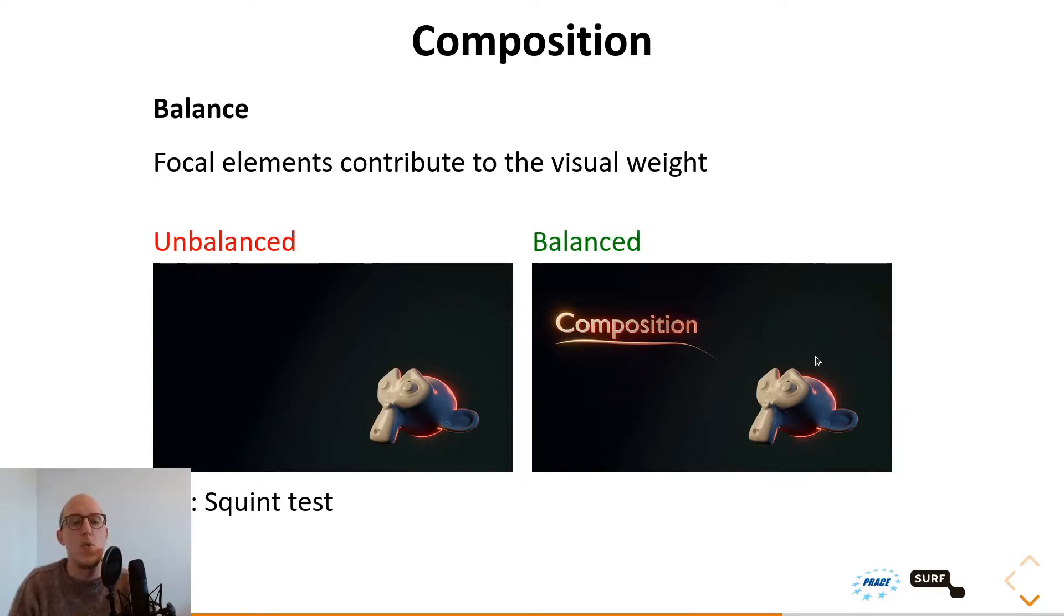Then we have the last composition component we're going to cover, and that is balance. Balance is the way you distribute your focal elements in your image so that the visual weight is balanced, so overall in the image it feels that the image doesn't have more focus on the left side than on the right side, for example. For example, the two images below: the first image is unbalanced because there's nothing going on the left side and all the stuff that's going on is on the right side, so it feels off. And the second image is balanced just by adding another component to the left side, and this way it's balanced and it looks more pleasing.